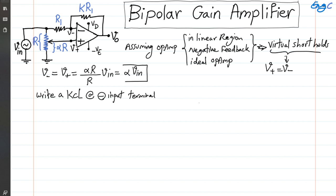We have current flowing through R1, and no current flowing through the input terminal of the op-amp, because we're assuming ideal op-amp with infinite input impedance. That current goes exactly through K times R1 toward the output.